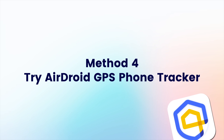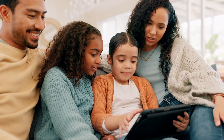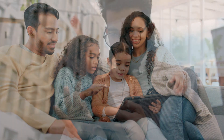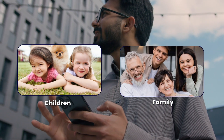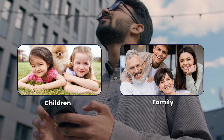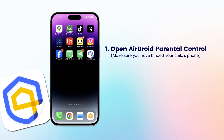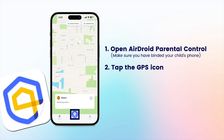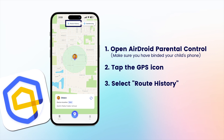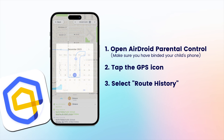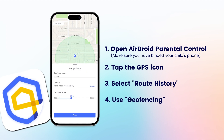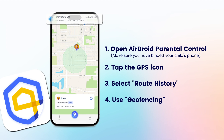Method 4: Try AirDroid GPS Phone Tracker. For parents, AirDroid Parental Control is your ally. It's a dependable GPS tracking app for keeping an eye on your children and family, both physically and online. To get started, open the AirDroid Parental Control app and tap the GPS icon at the bottom of the dashboard. This will show you the current location of the device. By selecting Route History, you can see where your kids have been and review the location history for the past 15 days. Use the geofencing feature to designate a specific area and receive notifications when your kids enter or leave that zone.